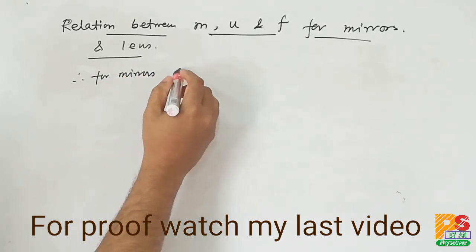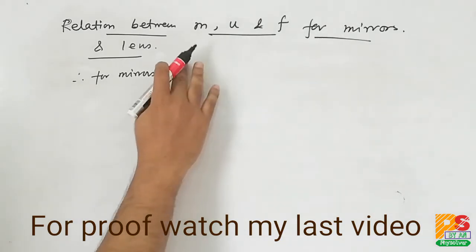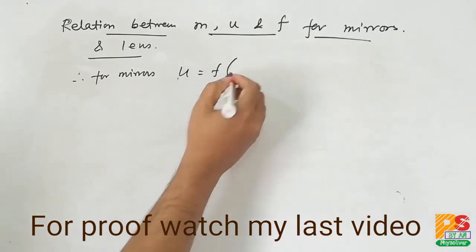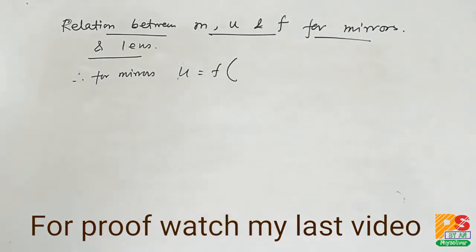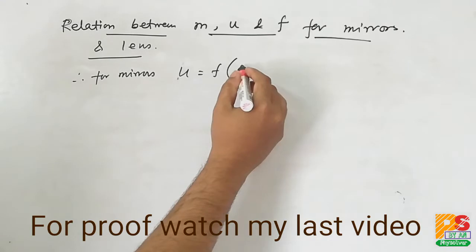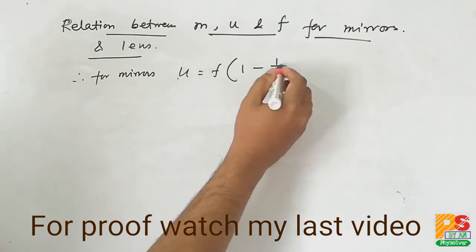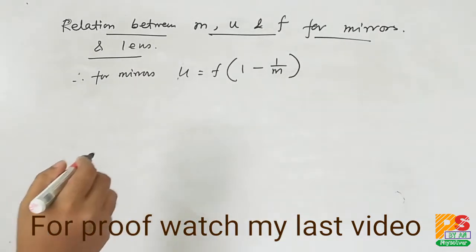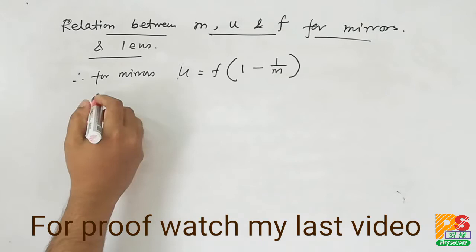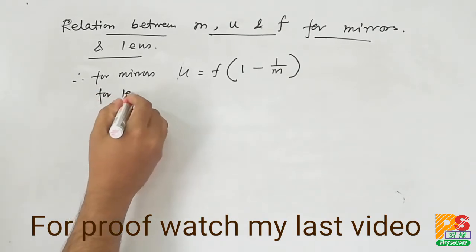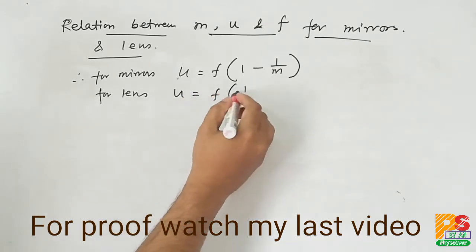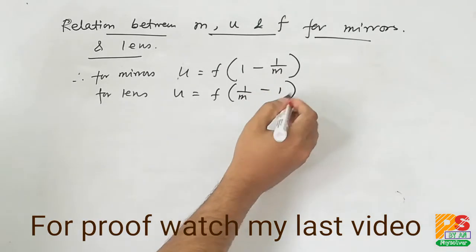In my last video I have derived the relation between m, u, and f for mirrors as well as for lens. Please see that video. For mirrors, u equals f times (1 minus 1 by m), where m is the linear magnification. And for lens, u equals f times (1 by m minus 1).